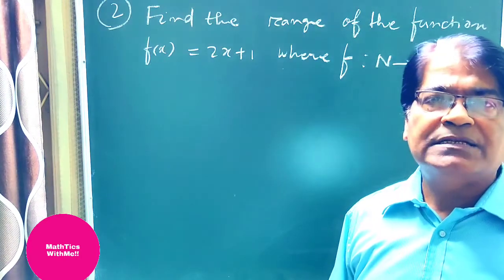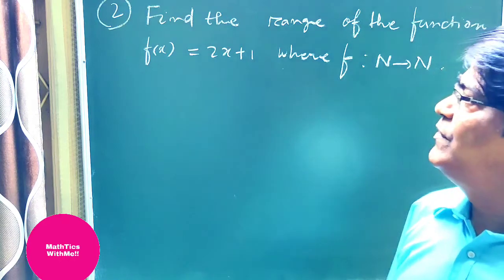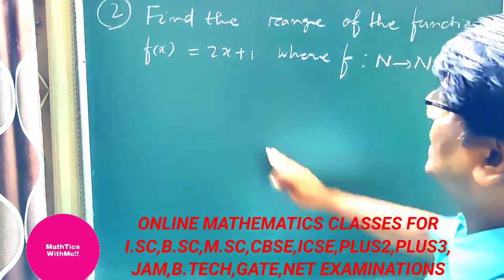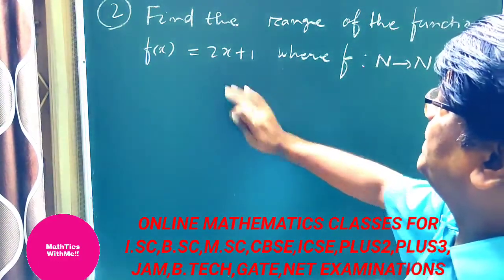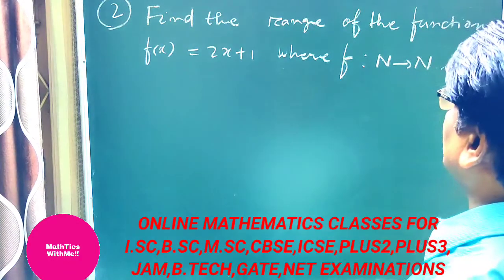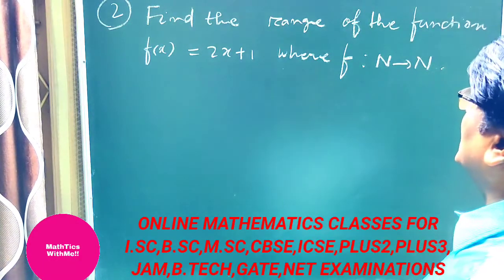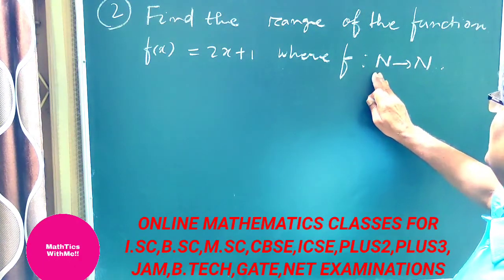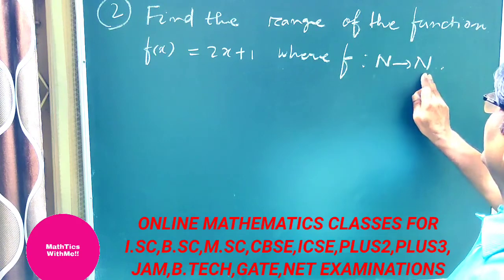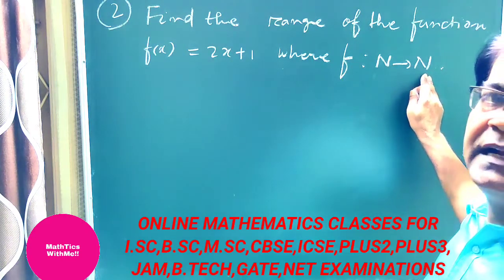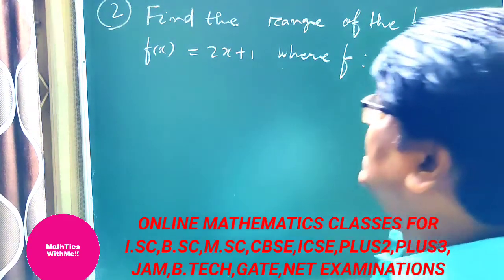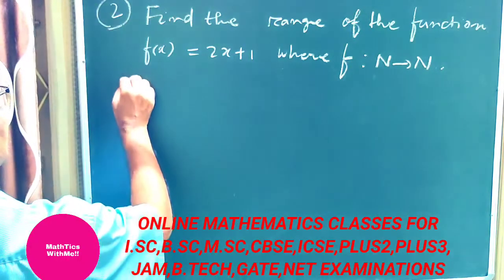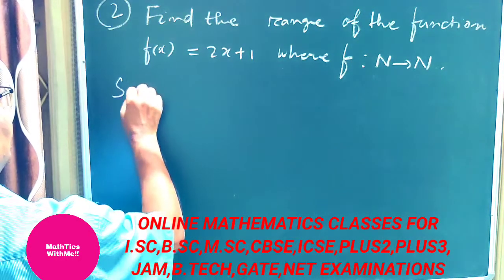Now our next question is: find the range of the function f(x) = 2x + 1, where f is a function from N to N, where N is the set of natural numbers. So we have to find the range.